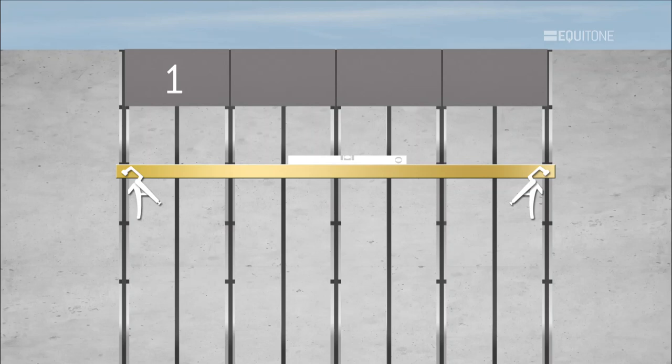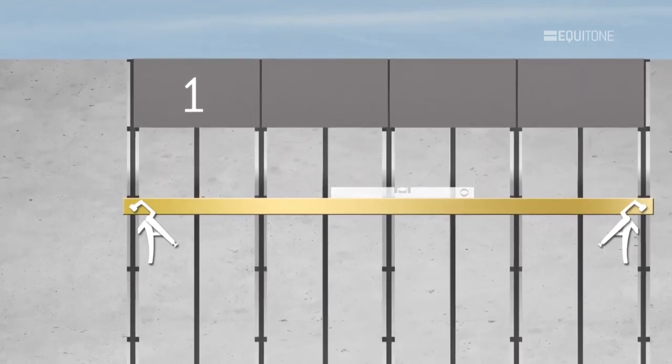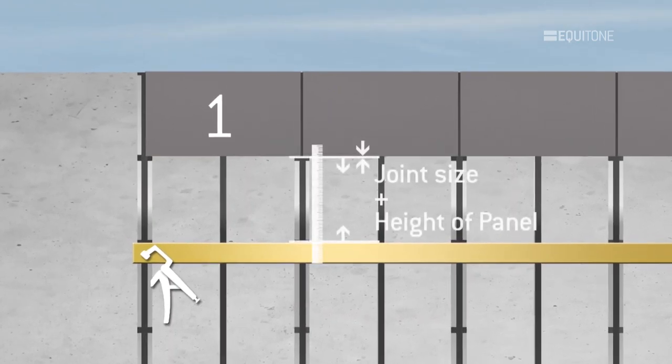Measure down from the bottom edge of the upper fixed panel and mark the position of the bottom edge of the next row of panels. This measurement is equivalent to the height of the panel plus the horizontal joint, for example the panel plus 10mm.